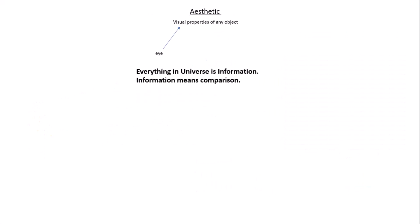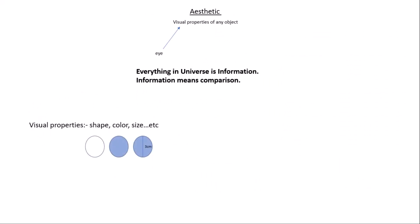Now what is the meaning of aesthetic? Aesthetic means visual properties of any object. Visual means you can observe it with your eyes. Keep one thing in your mind: everything in this universe is information, and information means comparison. There are lots of visual properties you can find in your daily life, but here I consider three main things: shape, color, and size.